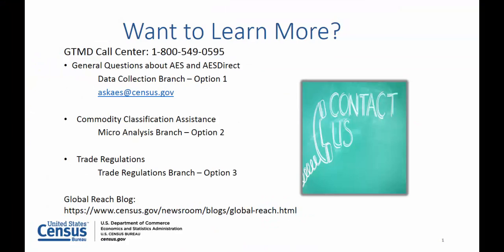If you have questions or general questions about AES and AES Direct, you can contact the Data Collection Branch at our 800 number and select Option 1. You're also welcome to email us at askaes@census.gov. For Commodity Classification Assistance in the Micro Analysis Branch, dial the 800 number and select Option 2. For a regulatory question, contact the Trade Regulations Branch at the 800 number and select Option 3.